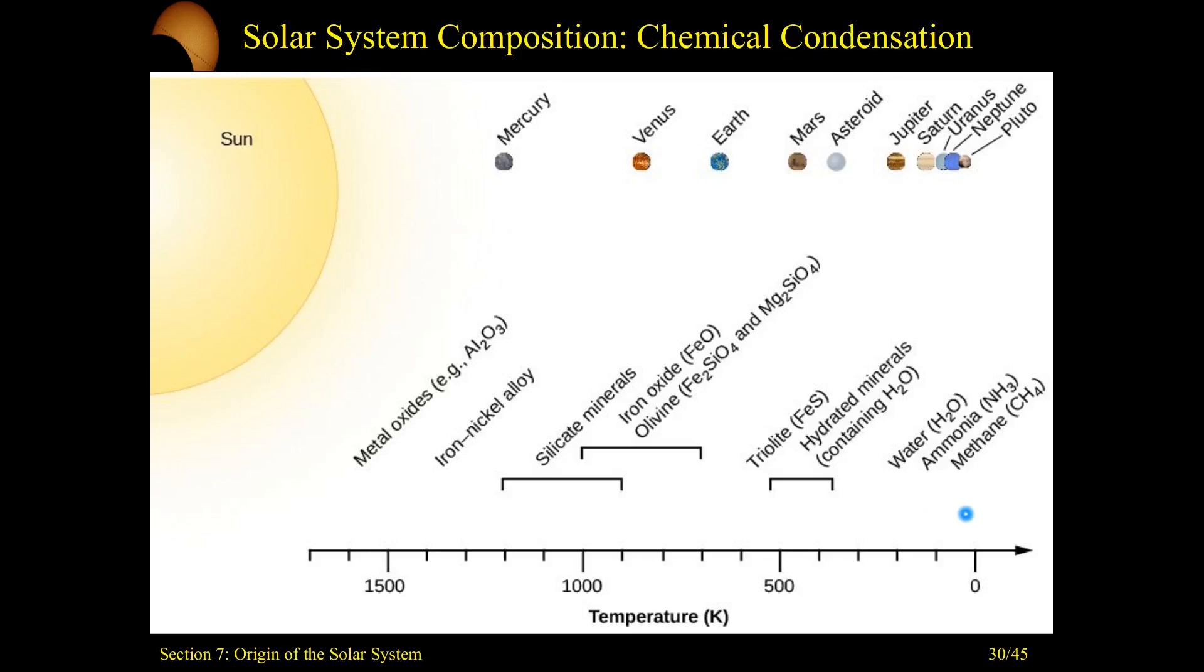Well, depending on the temperature in that region of space depends on what can condense. So way out here near the gas giants, that's where you're going to find ices like water, ammonia, and methane. Those temperatures allow those things to cool off enough and form into solid ices.